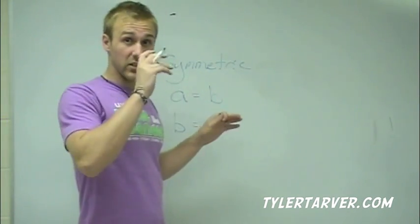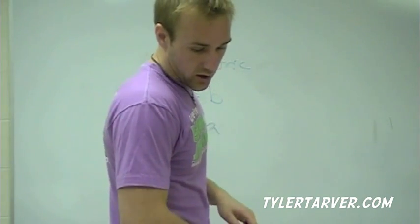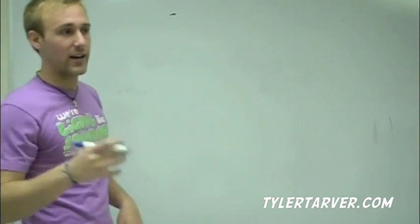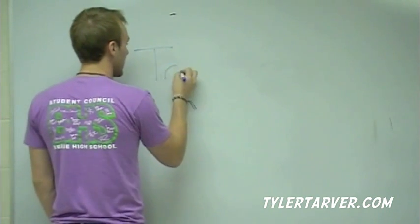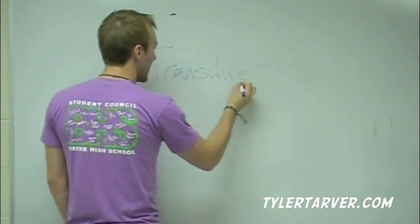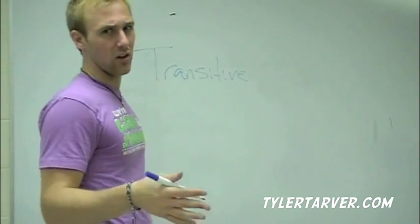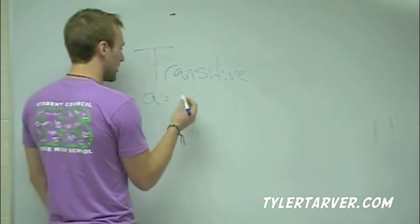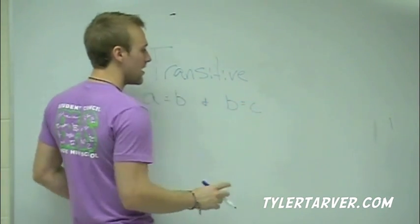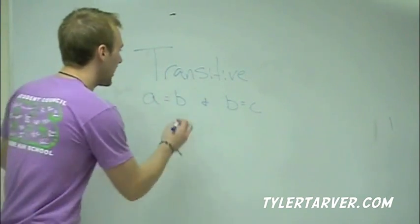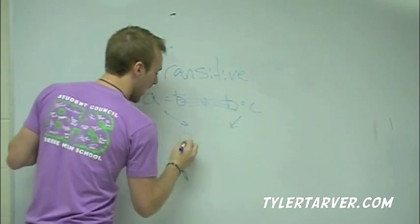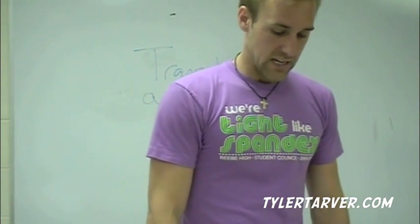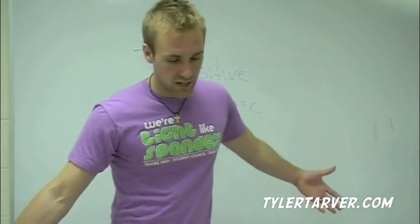You'll use this one quite a bit — write it down. Next: Transitive Property. I call this cutting out the middle man. If a equals b and b equals c, then we know a equals c. We cut out the middle man and bring the two ends together. a has to equal c.